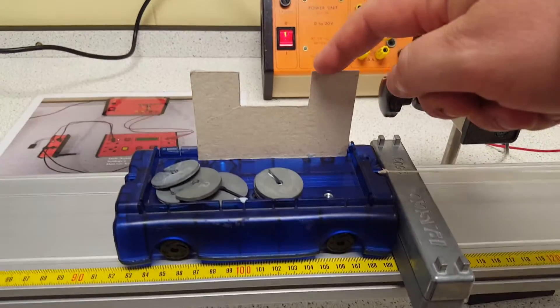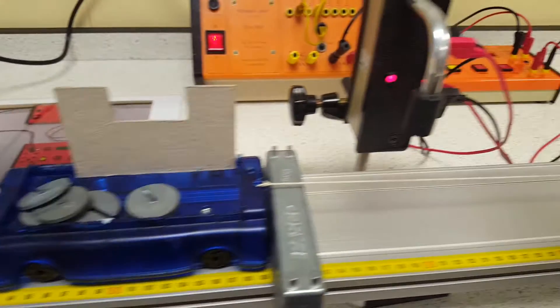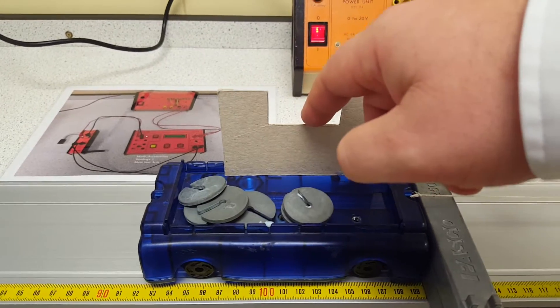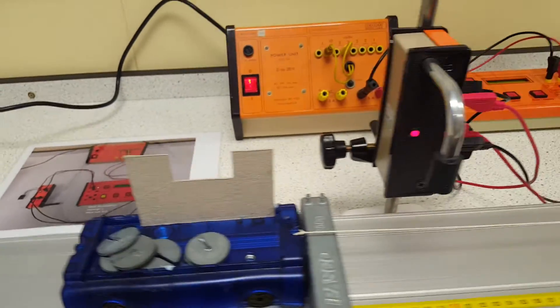This we call the mass, and the light gate here is going to record the change of speed in this time that it takes to go from there, and thus calculate the acceleration.